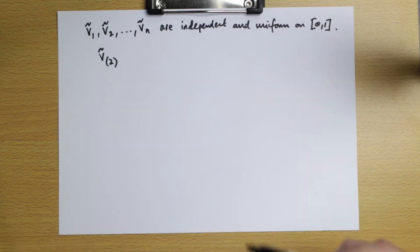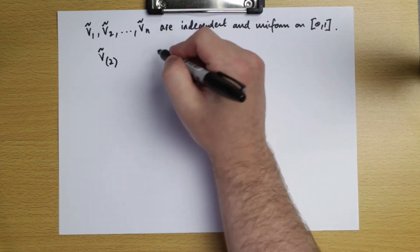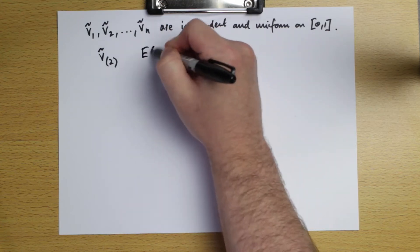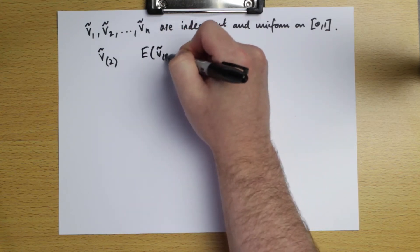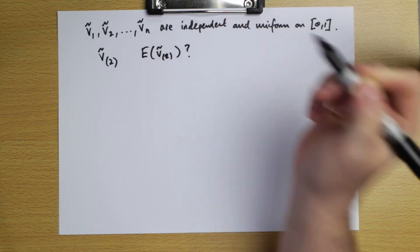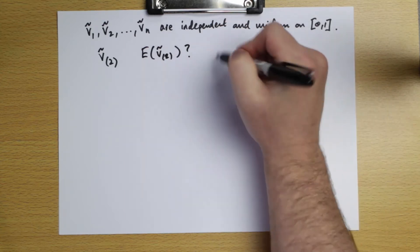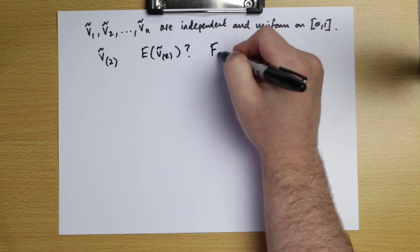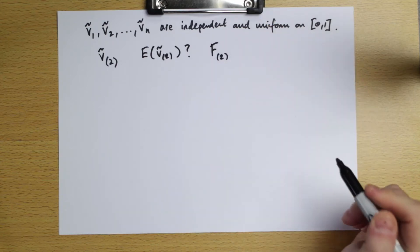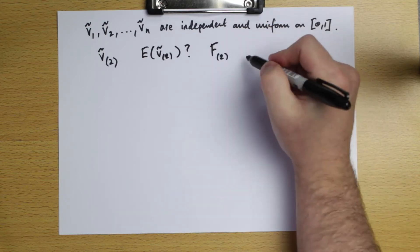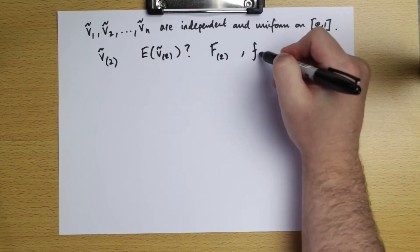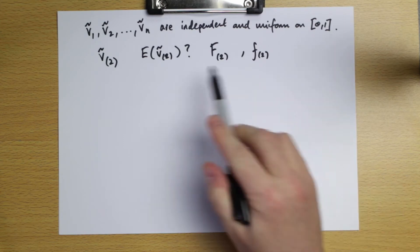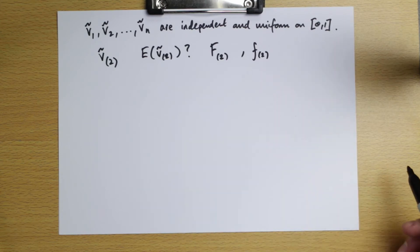The ideas are going to be very similar. If we're going to calculate the expected value of this second order statistic, we need to know its distribution function — let's call that F₂ — and we need to know its density function, lowercase f₂. So we need to figure out how to determine these things.